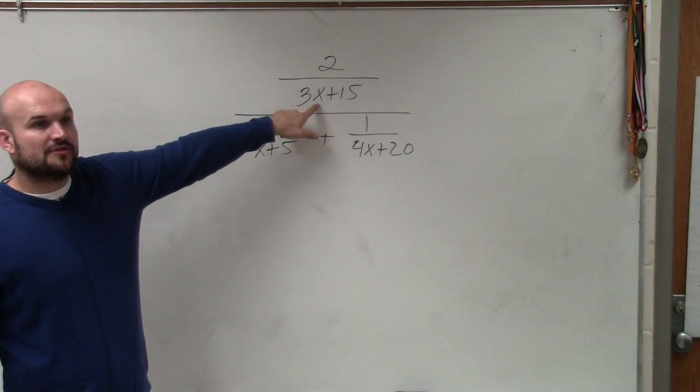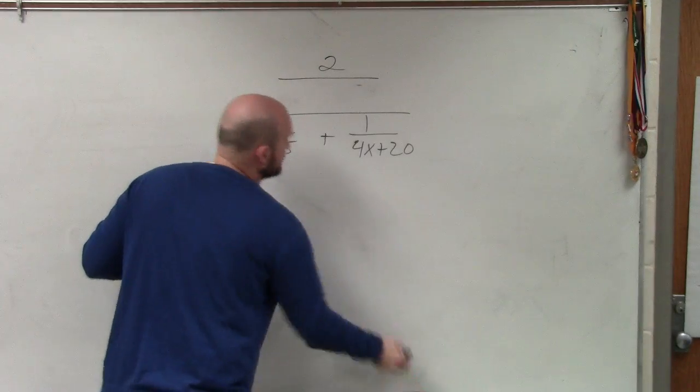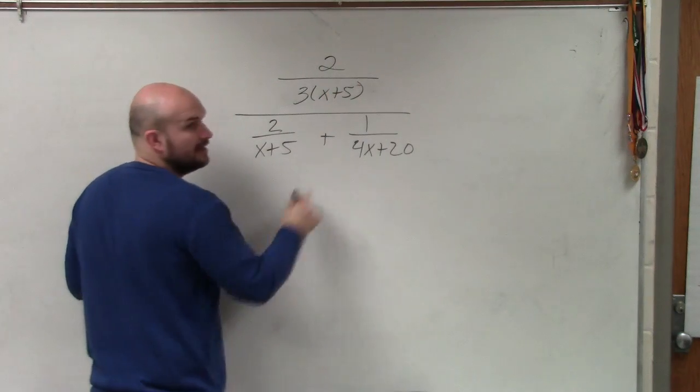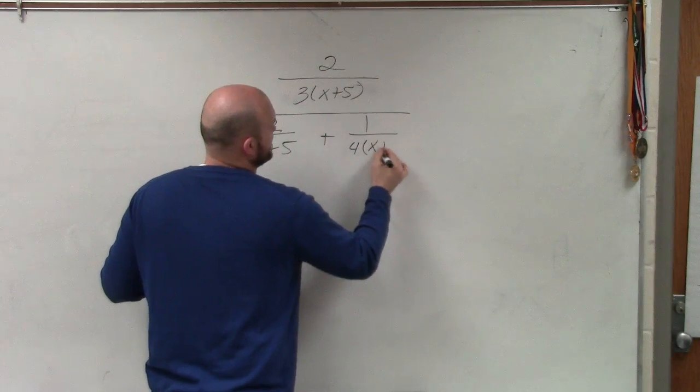Here I can factor out a 3, so that would give me 3 times (x+5). Here I can factor out a 4, so that's going to give me 4 times (x+5).